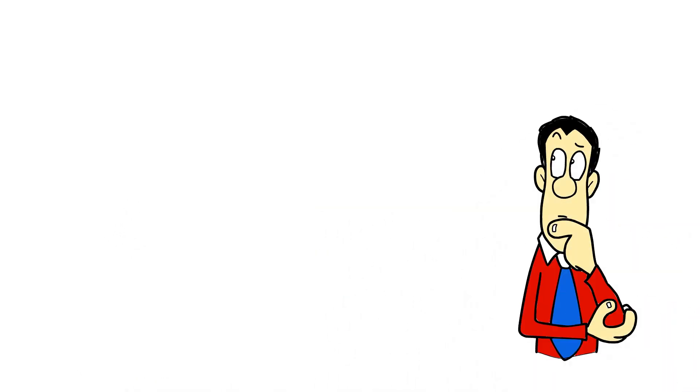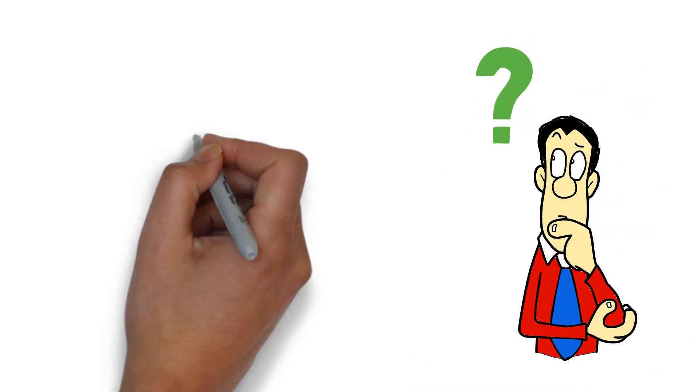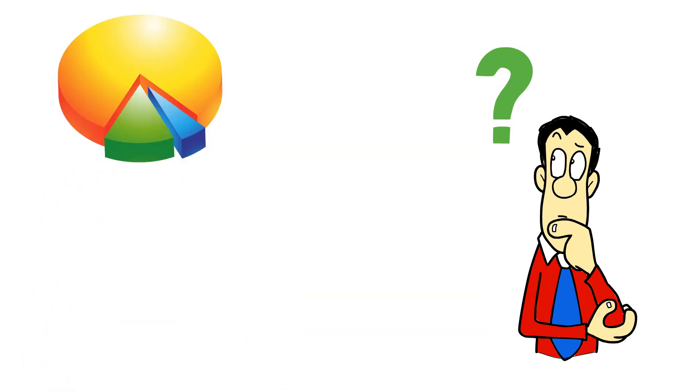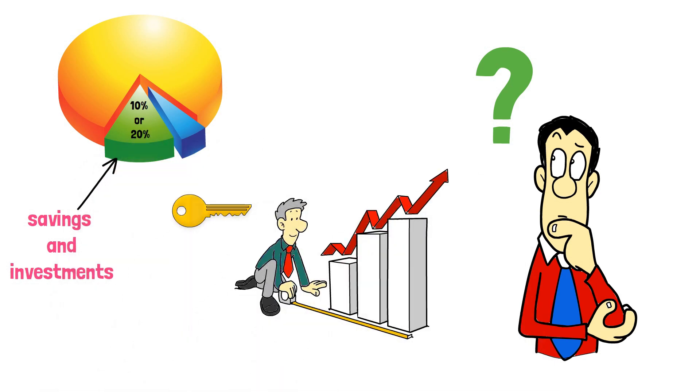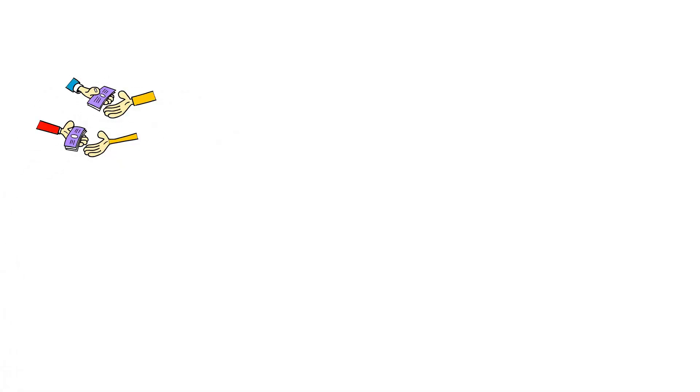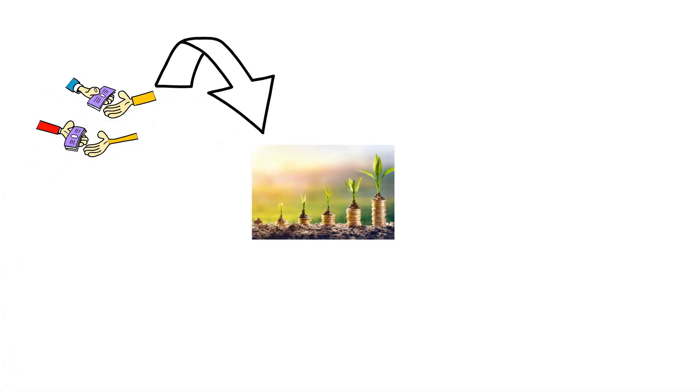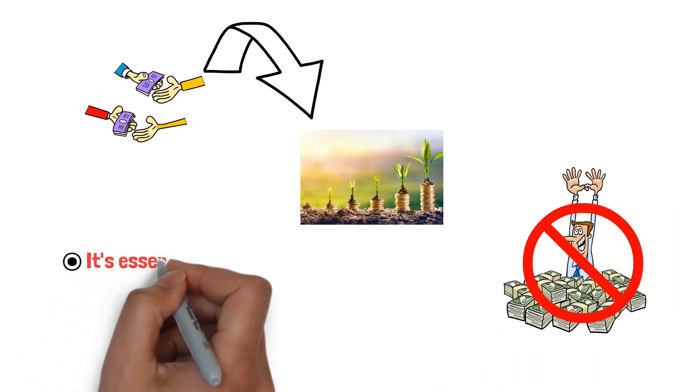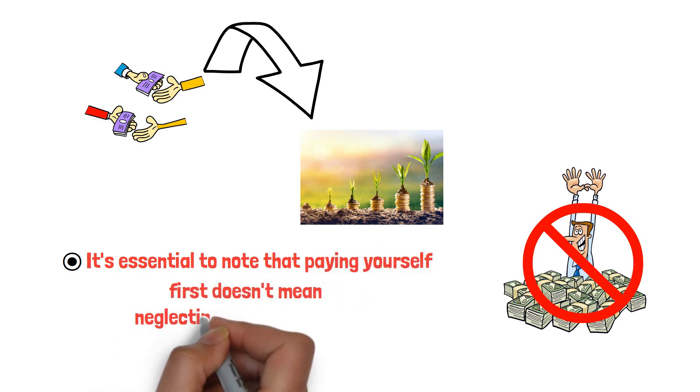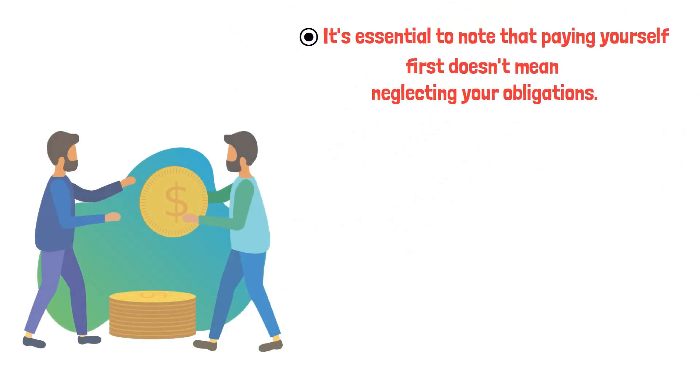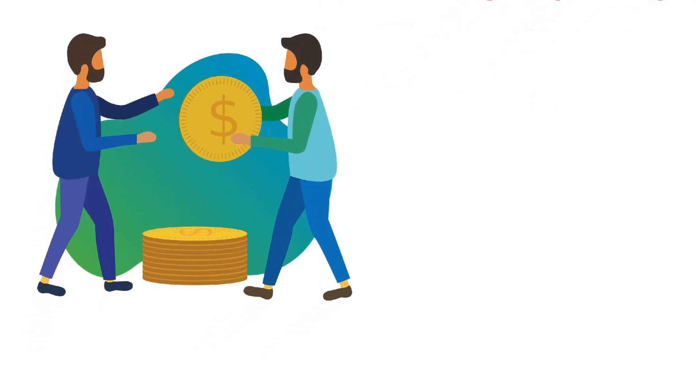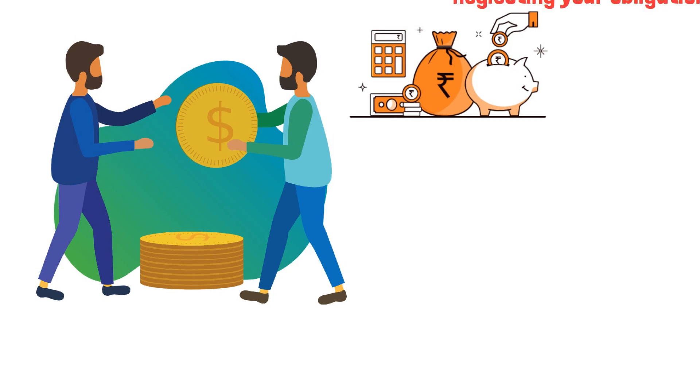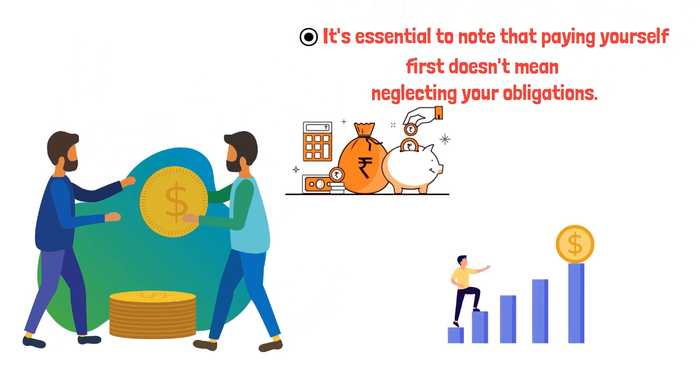So how can you implement the pay yourself first rule in your life? Start by setting a specific percentage of your income that you'll allocate to savings and investments. Whether 10%, 20%, or more, the key is to be consistent and stick to your plan. Automate the process by setting up direct transfers from your paycheck to your savings or investment accounts. This way, you won't be tempted to spend the money elsewhere. It's essential to note that paying yourself first doesn't mean neglecting your obligations. You should still cover your necessary expenses and pay off any debts. However, by prioritizing your savings and investments, you'll take a significant step toward achieving financial freedom.